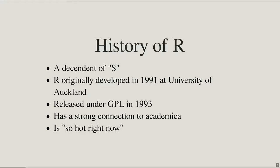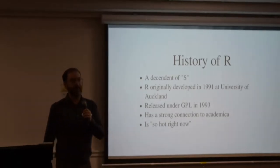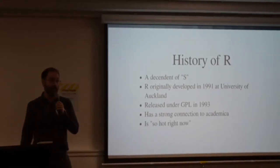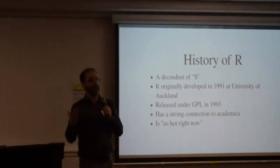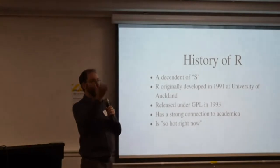Some history of R: it's a descendant of a language called S, which is a statistical language. It was originally developed by academics at the University of Auckland back in 1991 — a pretty strong New Zealand connection. It was released under GPL in 1993. It's got a strong connection with academia and is widely used by statisticians to implement new techniques. It's pretty popular right now despite being a 30-year-old language, driven by the rise of data science and data viz.